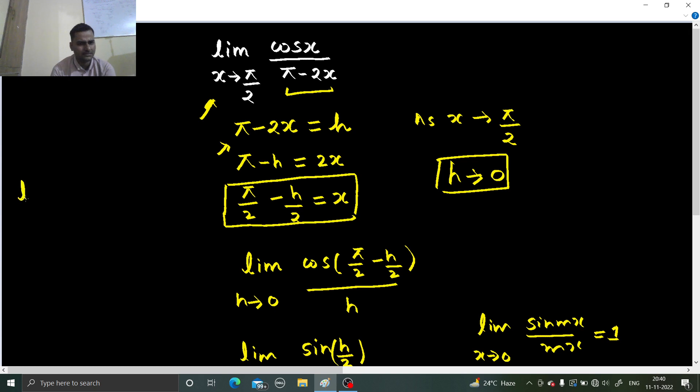We can write limit x tending to pi by 2, I can write cos x as sin 90 minus x. I can take 2 common from denominator. I will get pi by 2 minus x. Now I can easily take this 2 out.